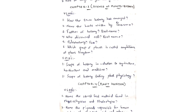Chapter 3: Science of Plants in Botany. VSAQs: how did the term botany emerge; name the books written by Parasara; who is the father of botany and what is the book name; who discovered the cell and what is the book name; paleobotany and its uses; which group of plants is called amphibians of the plant kingdom. SAQs: scope of botany in relation to agriculture, horticulture, and medicine; scope of botany taking plant physiology. Long answers are not necessary in this chapter.